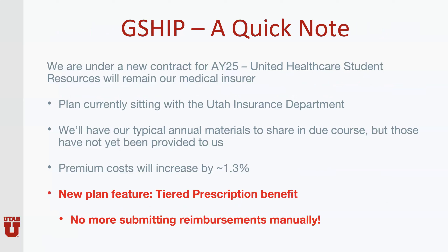A quick note on GSHIP. We are under a new contract for Academic Year 25 with United Healthcare Student Resources. They will continue to remain as our medical insurer at this time. The plan is currently sitting with the Utah Insurance Department, and we have our typical materials coming to us soon and will share those in due course. We expect the premium costs will increase by about 1.3% — you could budget for 1.5% or 2% if you wanted to be careful. A new plan feature included this year is tiered prescription benefit. There will be no more need for submitting reimbursements manually for prescriptions — students will have a prescription plan.